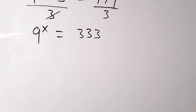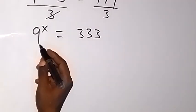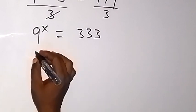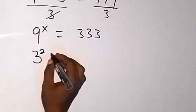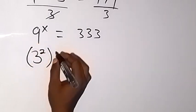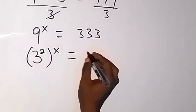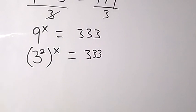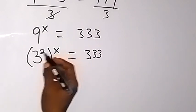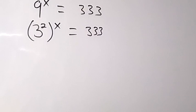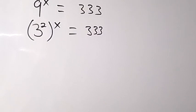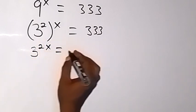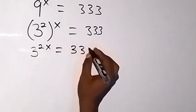And from there, let's express 9 in base 3, such that we have 3 raised to power 2 now, then raised to power x. We then get 333. And we can use x here to open this bracket. When we open that bracket with x, we have 3 raised to power 2x, which gives us 333.